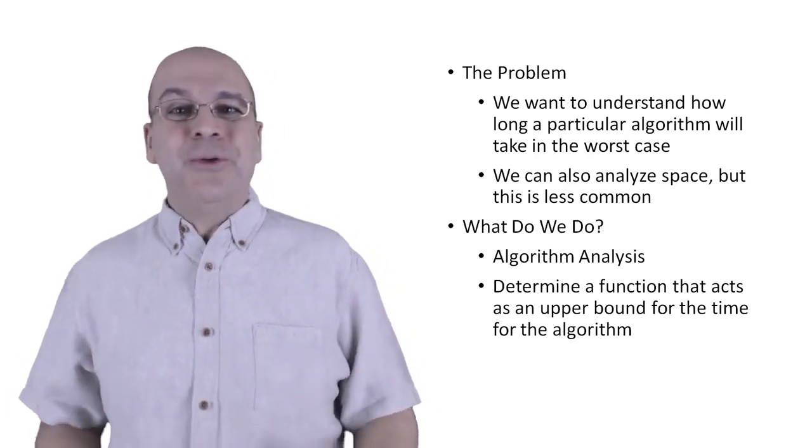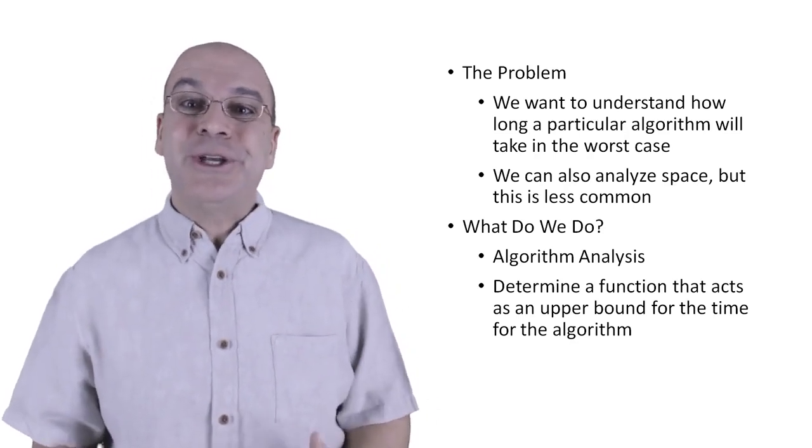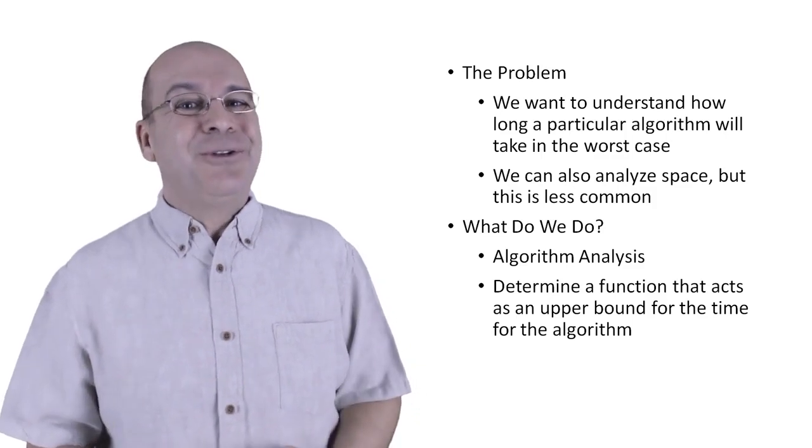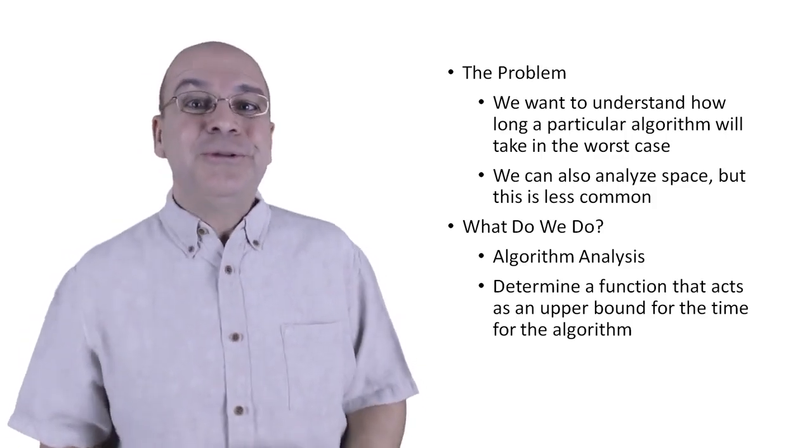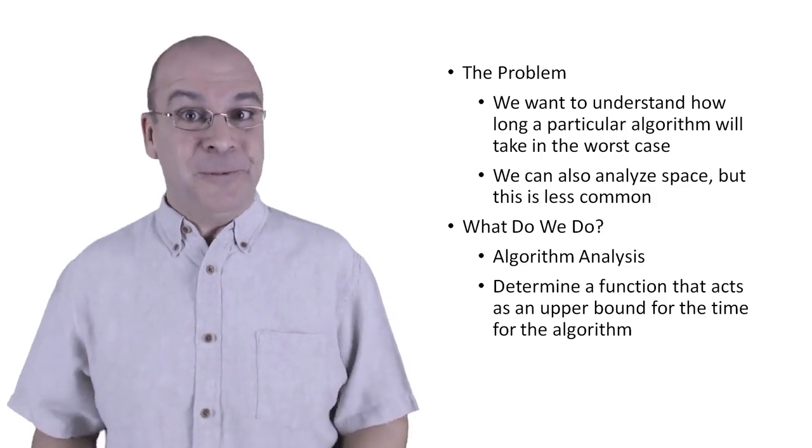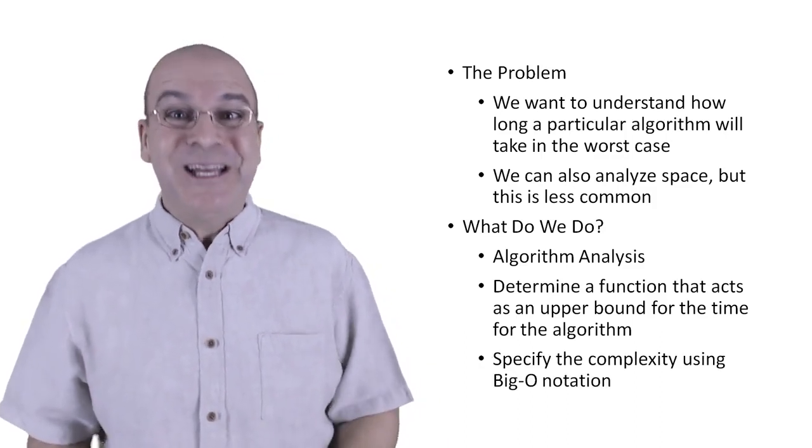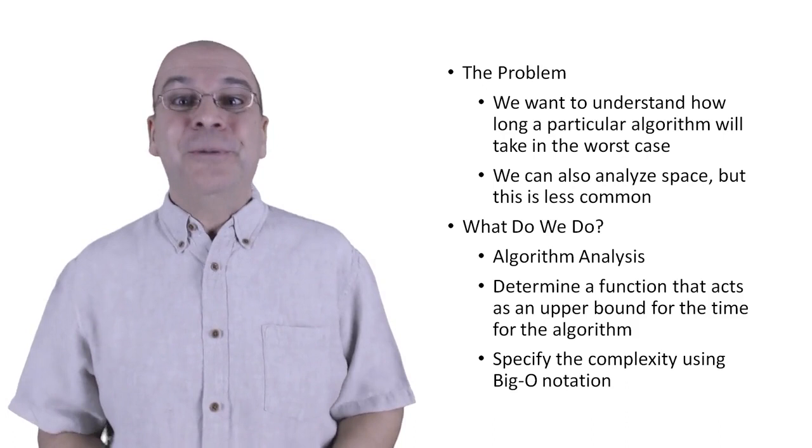So now we know we need a function that serves as the upper bound, and there ought to be a notation we can use to specify that function. And of course there is, and that notation is called big O notation. So you should go do an in-video quiz about big O, and now we should go look at a picture.